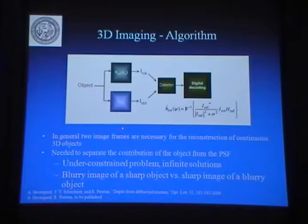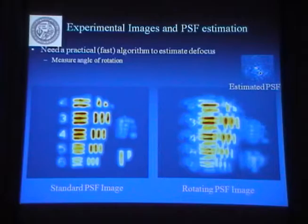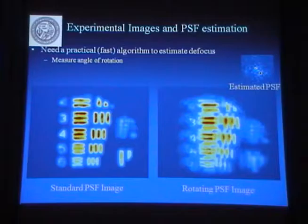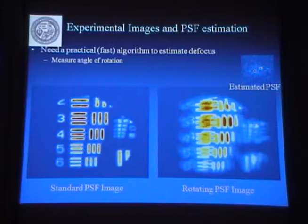In block diagrams, you take two images: one regular image using the standard impulse response or PSF, and one with the rotating PSF. Then you perform a deconvolution. Instead of showing the equations, I'll show an example. We take two images — you see the regular image is in focus, and this one has every object appearing as two spots. From these two images, you can recover the point spread function. You look at the angle and you can tell the position. As we move this object back and forth, you see that this rotates, and the angle tells you the position.